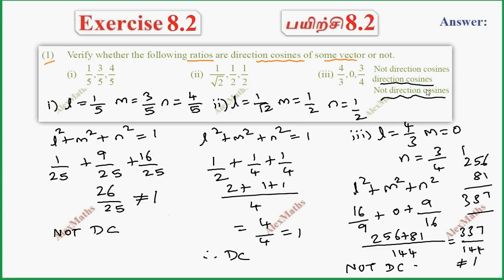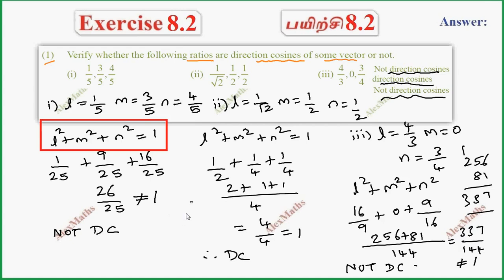So if we check the direction cosines, the relation between direction cosines is the formula L² + M² + N² = 1. If this is satisfied, it represents direction cosines.